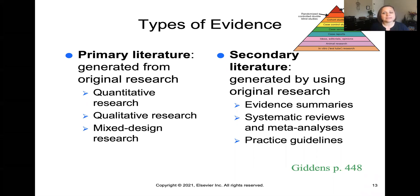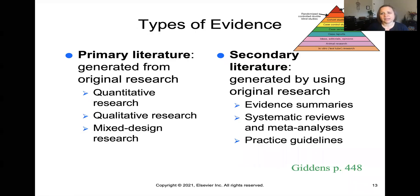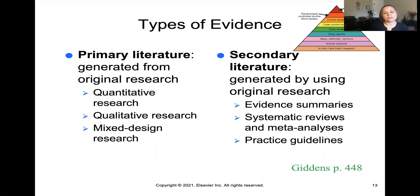Secondary evidence includes evidence summaries, systematic reviews, and meta-analyses, which are very powerful because they find all the different research on one specific topic and pull it together to see what's the best evidence available. With COVID-19, we saw a lot of meta-analyses and even AI trying to pull together the best research from around the world. The pyramid on your screen shows that systematic reviews and meta-analyses are the highest level of validity and reliability, grading different types of research studies accordingly.